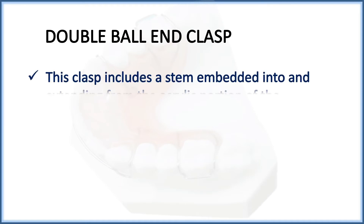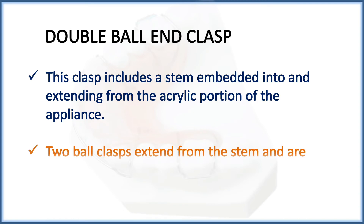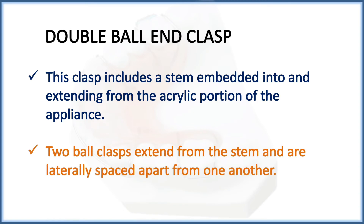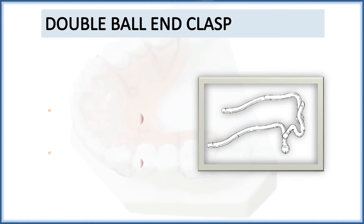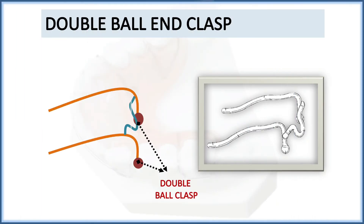The double ball end clasp includes a stamp embedded into and extending from the acrylic portion of the appliance. Two ball clasps extend from the stamp and are laterally spaced apart from one another, meaning the double ball end clasp has two balls connected to each other by a stamp. This clasp does not exert any wedging force in the interdental embrasures like the single ball clasp, and provides better retention than the single ball end clasp.